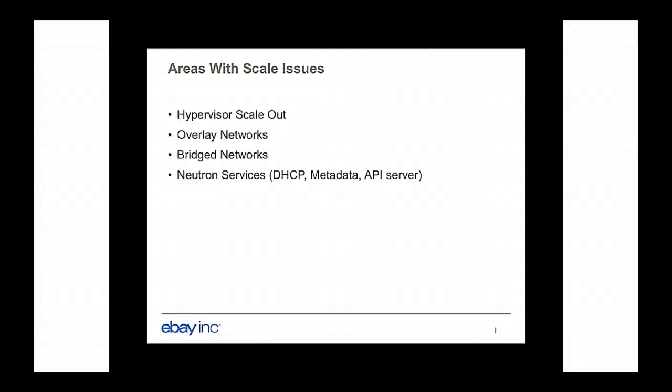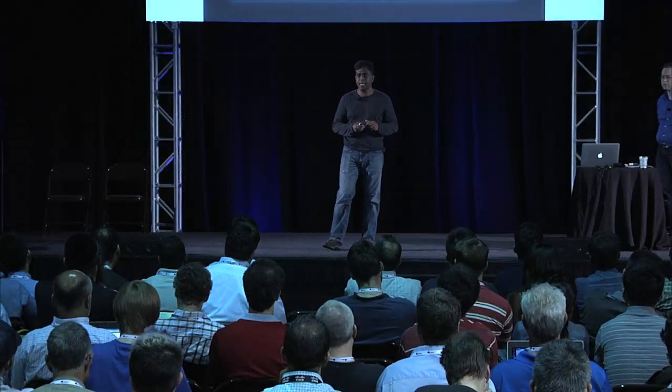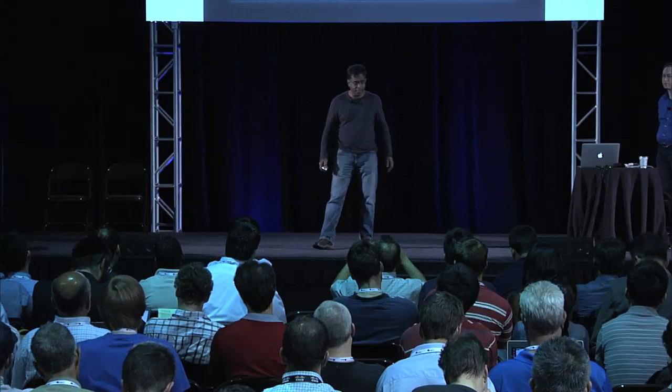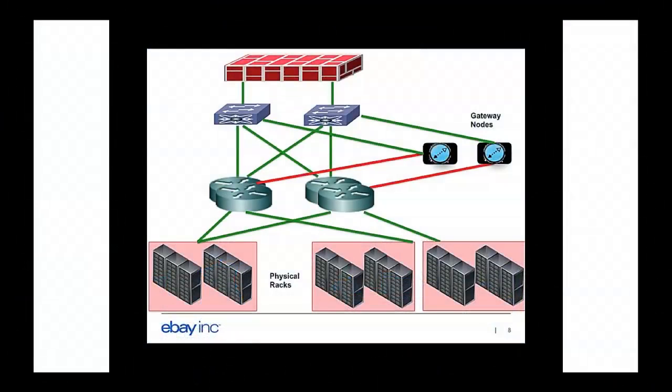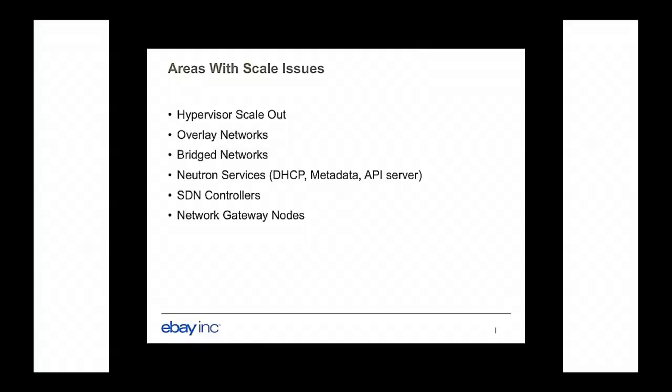We also had some issues running Neutron API servers, especially in regards to DHCP, running active-standby and active-active mode, metadata, and Neutron API servers. We don't use the reference implementation SDN controllers — for example, Neutron has a reference implementation, but we don't use that. We use a commercial SDN controller: VMware NSX as our controller. We also have network gateway nodes. We also had issues related to upgrade, but that needs a separate presentation by itself.